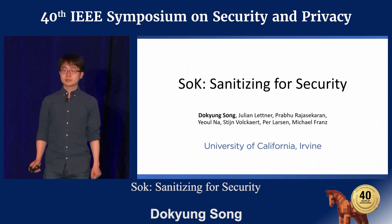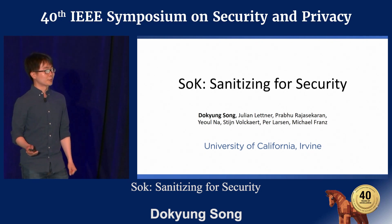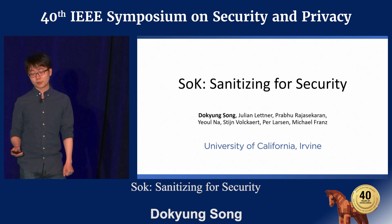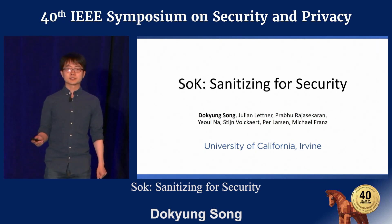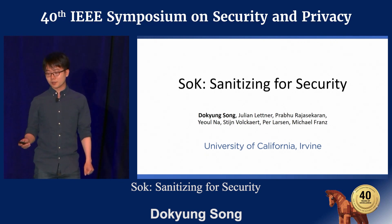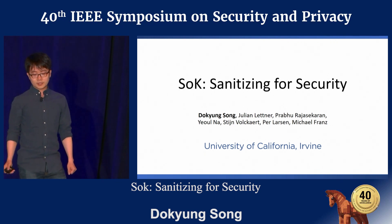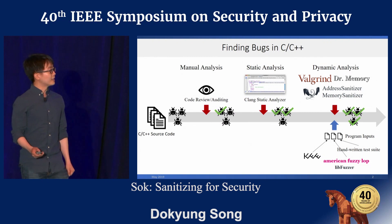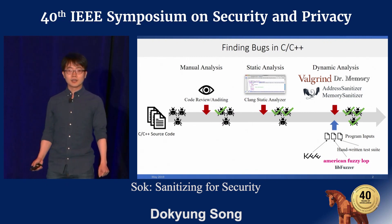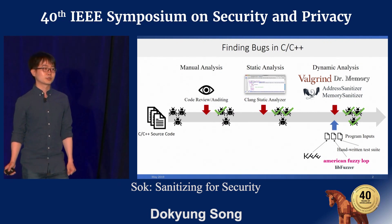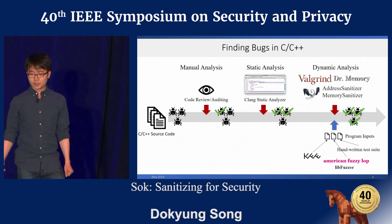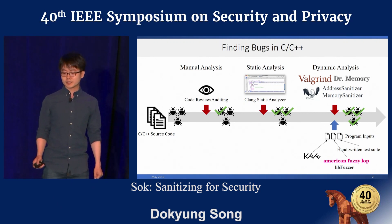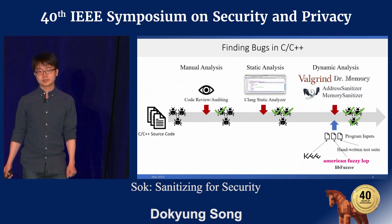This talk is going to be about tools that find vulnerabilities in C and C++ programs. This is an SoK paper, so there will be lots of material in the paper that's omitted from the talk. I'd like to start by looking at how C and C++ programs are vetted for security vulnerabilities today. There are, broadly speaking, manual analysis, static analysis, and dynamic analysis.